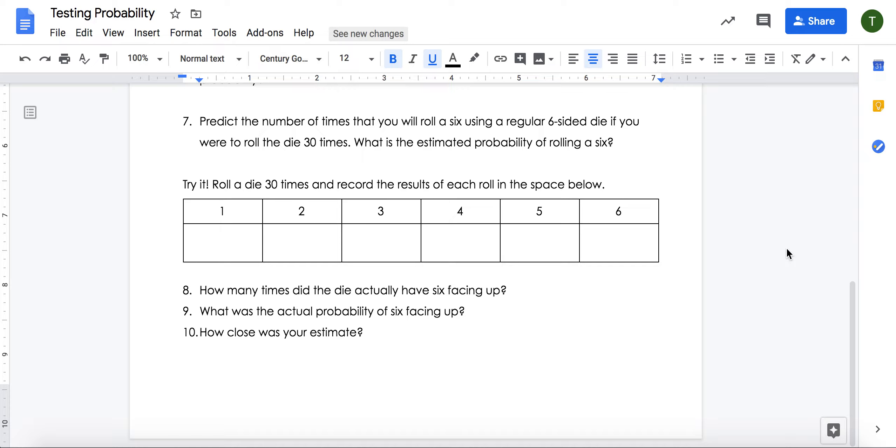For the second experiment, in questions 7 through 10, you're going to predict the number of times that you will roll a 6 using a regular 6-sided die if you were to roll the dice 30 times. What is the estimated probability of rolling a 6? We know that on a regular 6-sided die, each number only appears once. This means that we could estimate that we would roll a 6 one out of 6 times. So we do the same thing and compare the fractions. What would 1 out of 6 be as a fraction out of 30?